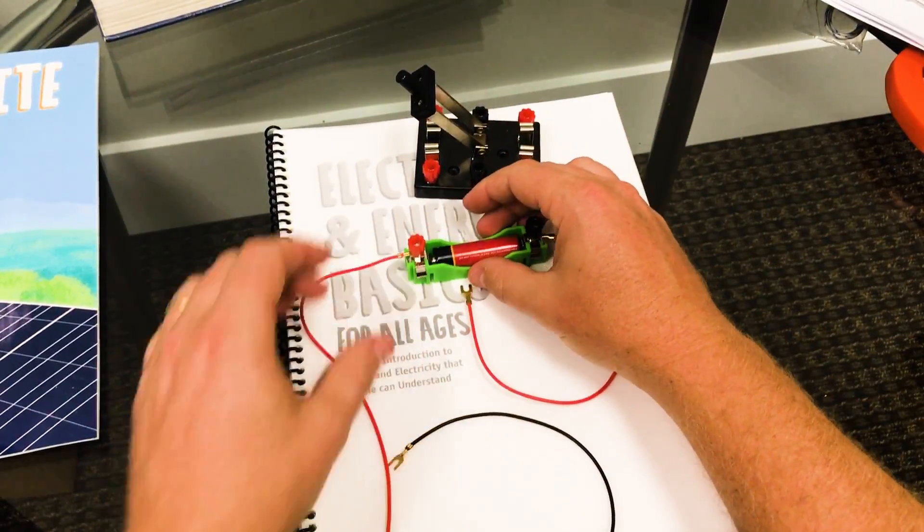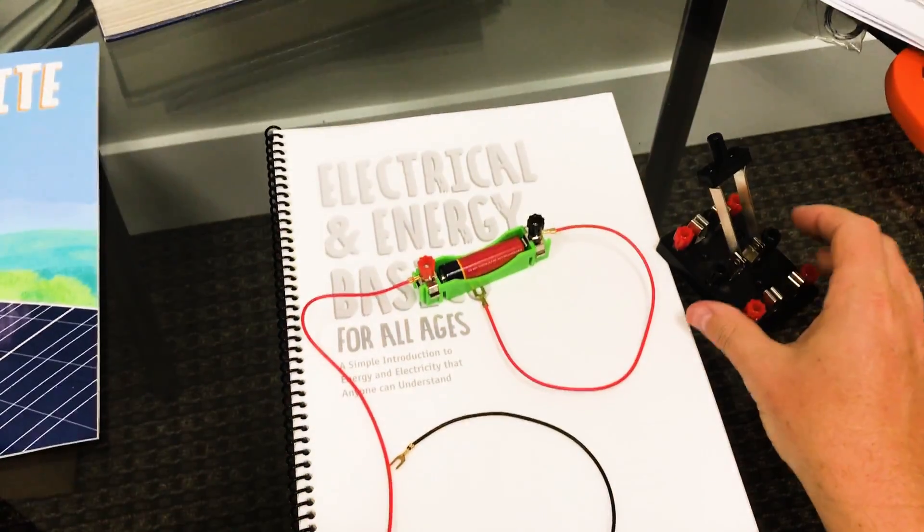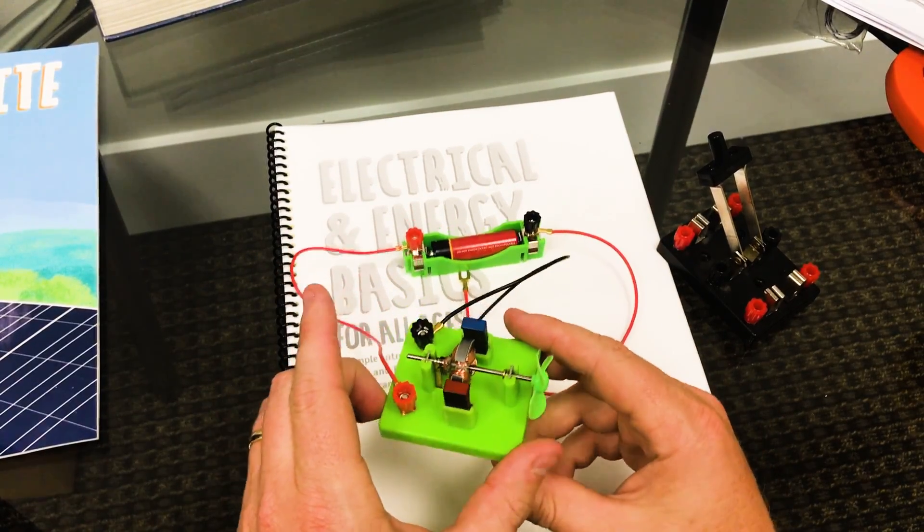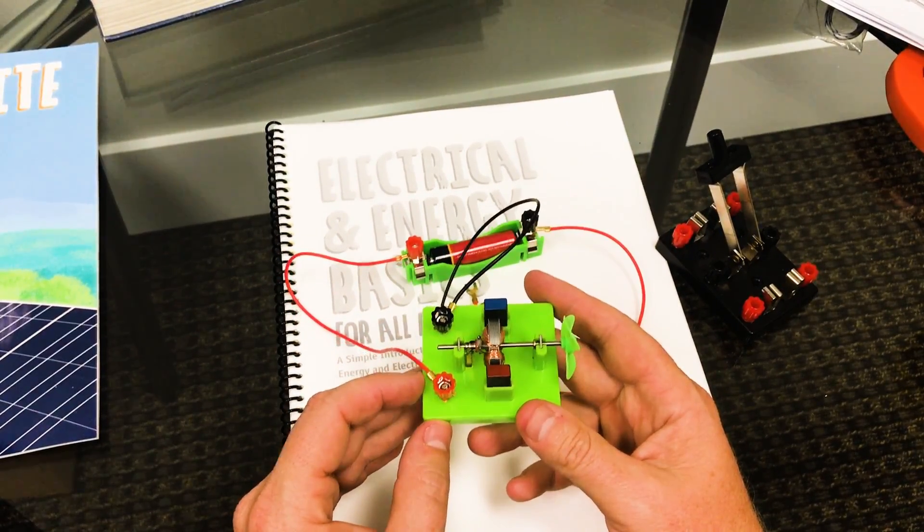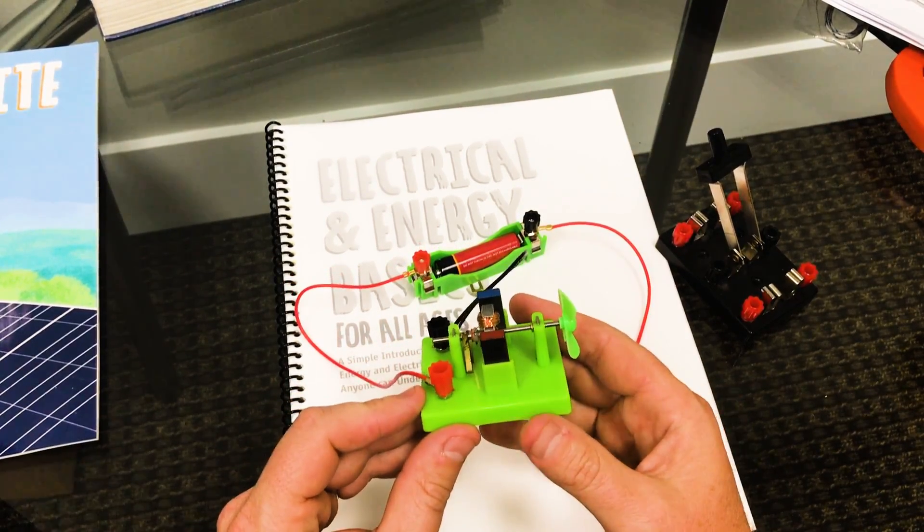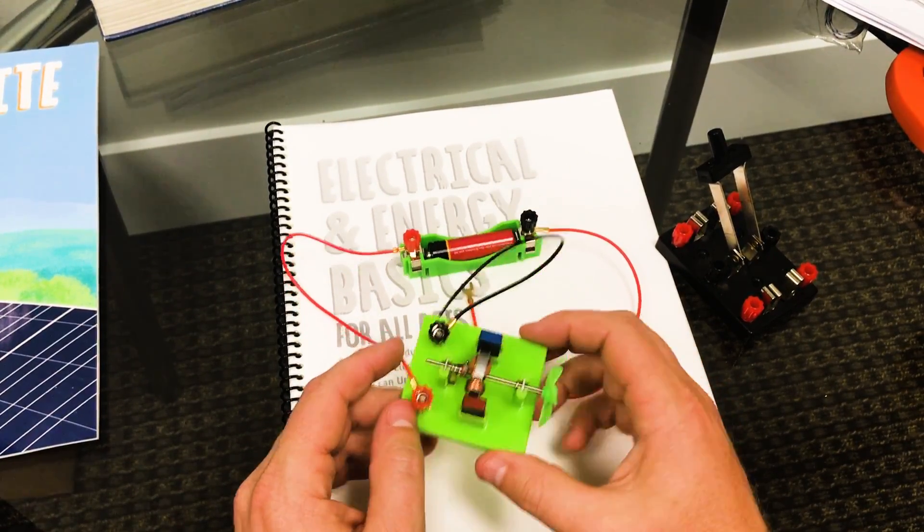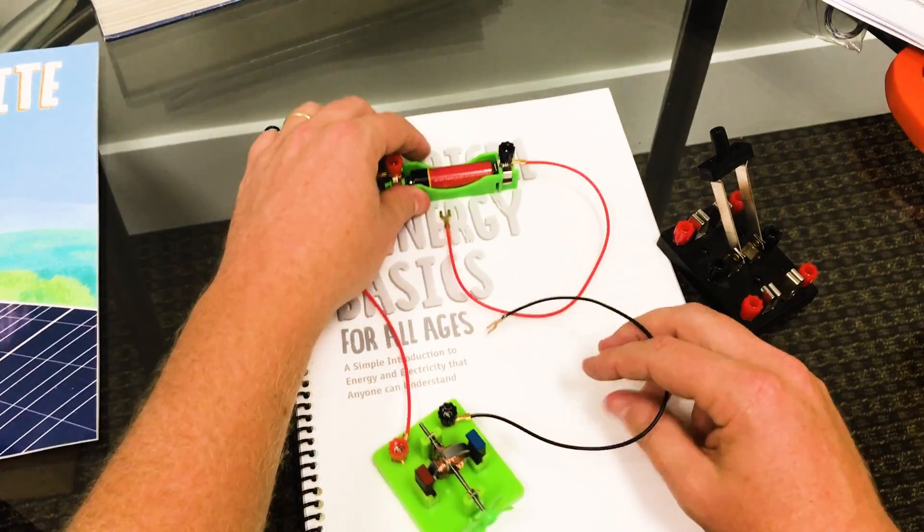and that is that we have a power supply, we have a switch, and we have a load. A load is the part that does whatever it is we're wanting to do. It's the part that actually converts electromotive force to something that we want to accomplish, whether it's light or heat, or whether in this case it is a motor. All I'm going to do here is just show you the basics.